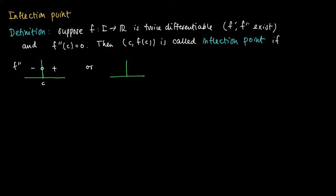Or vice versa: on the left hand side we see a positive sign and on the right hand side we see a negative sign, with 0 at c. So an inflection point is characterized by a zero of the second order derivative and a sign change at c of this second order derivative.